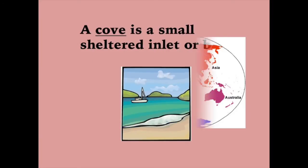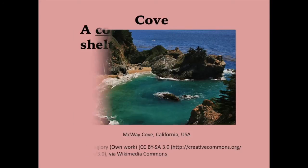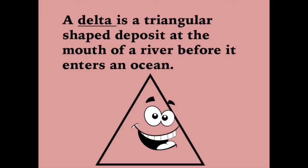A cove is a small sheltered inlet or bay. A delta is a triangular-shaped deposit at the mouth of a river before it enters an ocean.